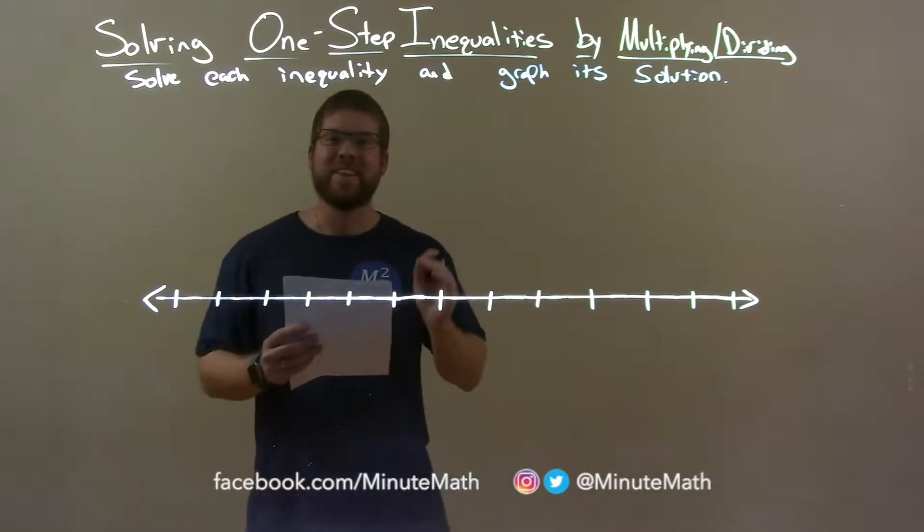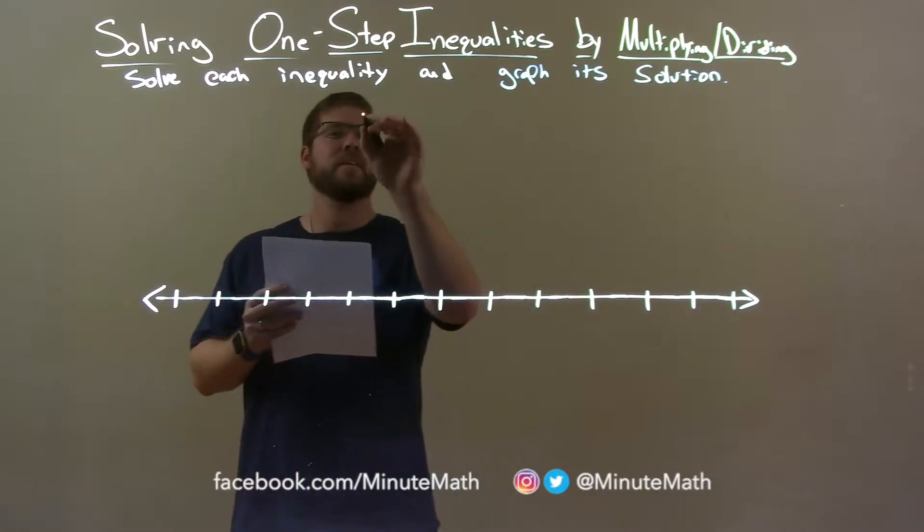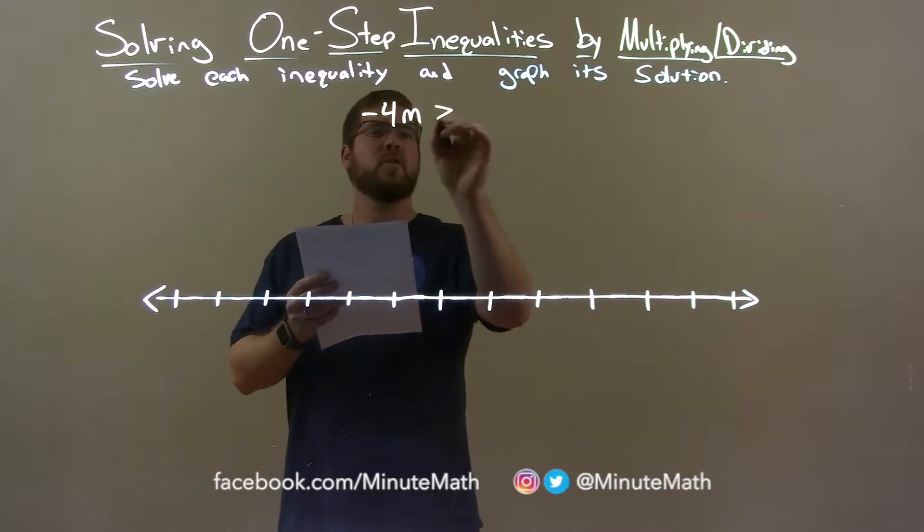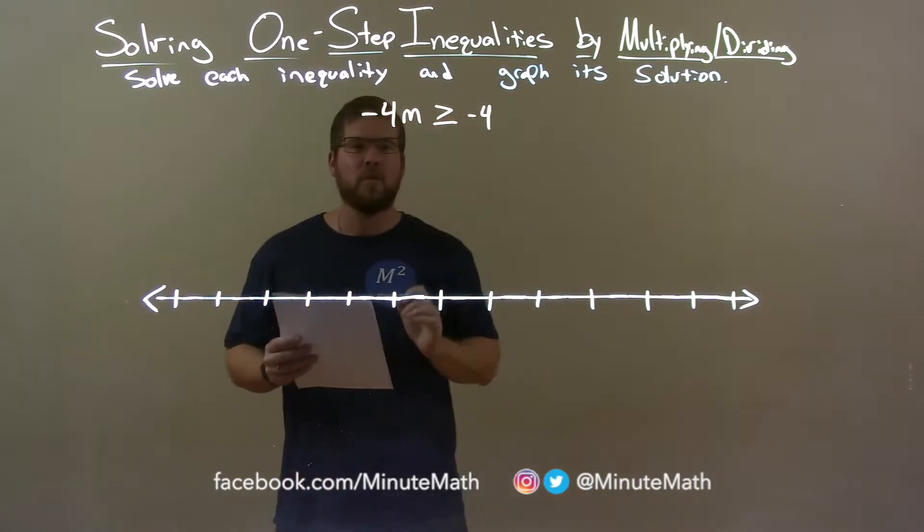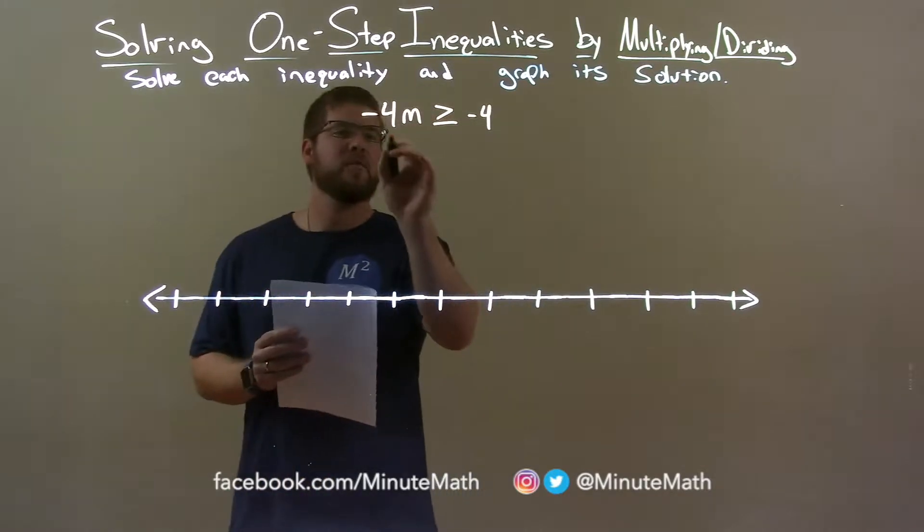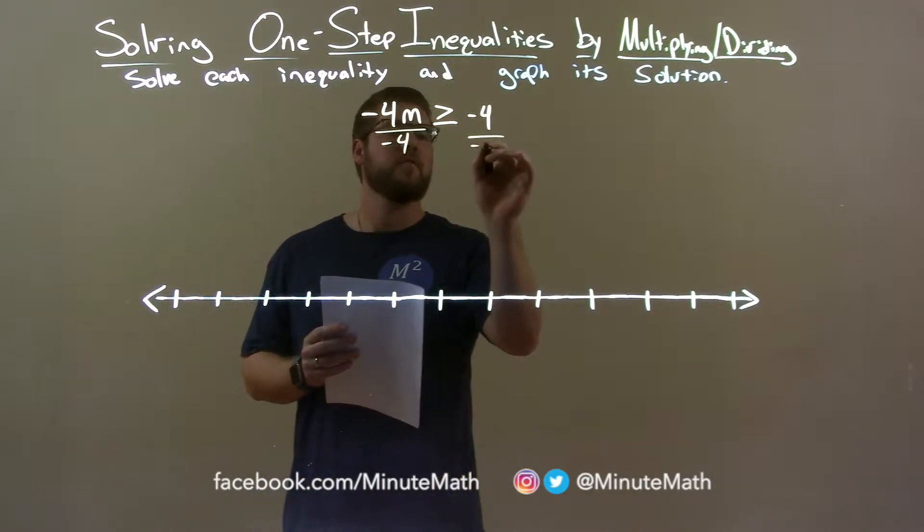If I was given this inequality, negative 4m is greater than or equal to negative 4, to get m by itself, I'm going to divide both sides by negative 4.